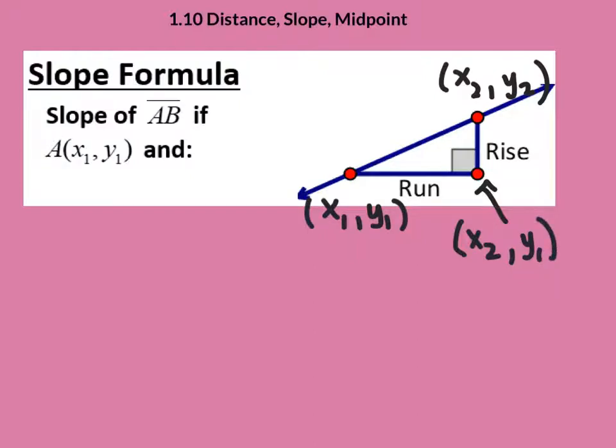Now why did I do that? Well, if I want to find the change here in this, the rise, it would simply be the change from Y2 to Y1. That's an easy thing. Y2 minus Y1. That's the rise every time.